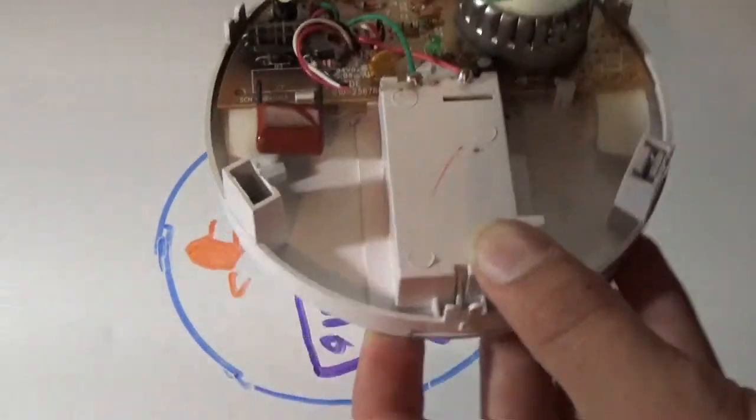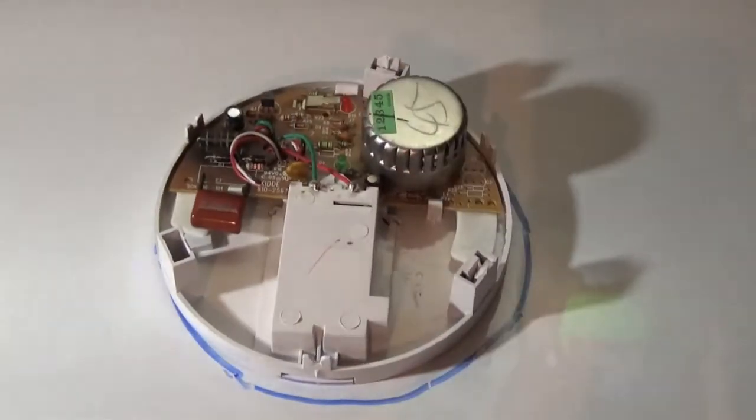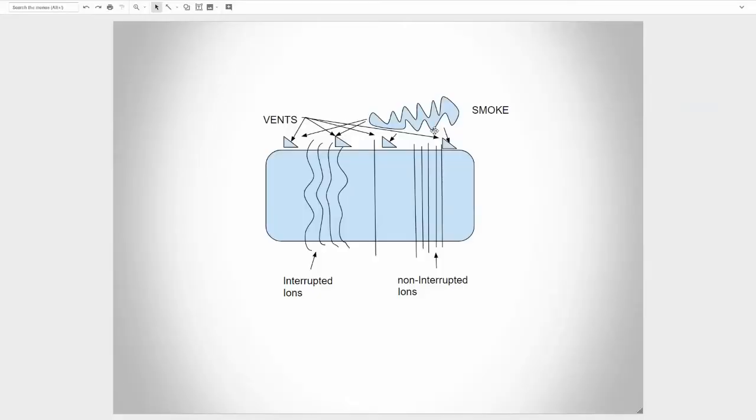And it's really cool the way this works, I'll show you guys in just a second. So guys I know this may look a little confusing at first, so this is our ionization chamber. So up here we have the vents like you saw before, these are the non-interrupted ions that are just normally passing through, and then if there's ever a fire you will have smoke going through the vents which is represented by these arrows right here and then they will get interrupted which will trigger the alarm.